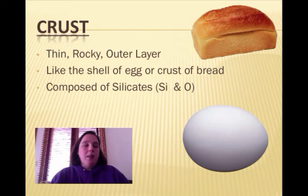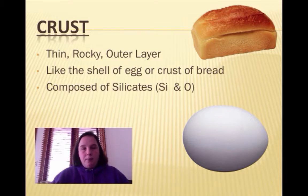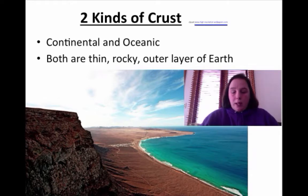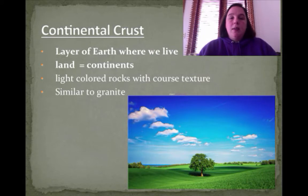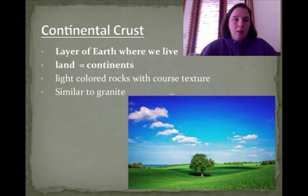Let's start with the crust. It's a thin rocky outer layer — like the shell of an egg or a very crusty bread. It's composed mainly of silicates, which include both silicon and oxygen. There are two kinds of crust: continental and oceanic. Continental crust is the layer of earth where we live — land, continents, that kind of stuff. The rocks found there are very similar to granite: light colored and coarse textured.